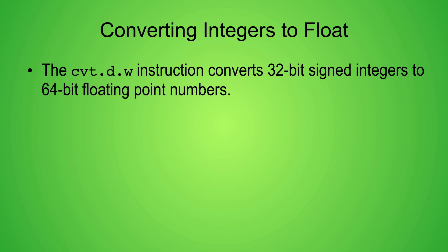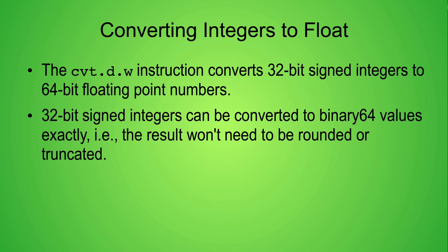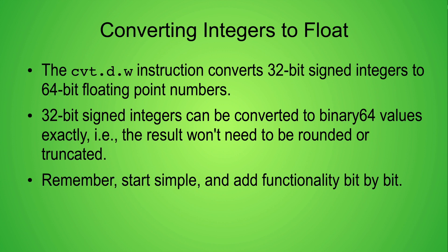The CVT.D.W instruction converts a 32-bit signed integer to a 64-bit floating point number in the IEEE 754 binary64 format. I'm starting with this instruction because 32-bit signed integers can be represented exactly using the binary64 format. No rounding of the result is required. Remember, my rule is to start with something simple that works and then add functionality as needed.